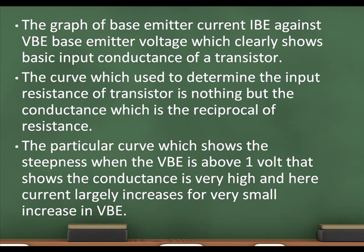The graph of base emitter current IBE against VBE base emitter voltage clearly shows the basic input conductance of a transistor. The curve is used to determine the input resistance of the transistor, which is the reciprocal of conductance.